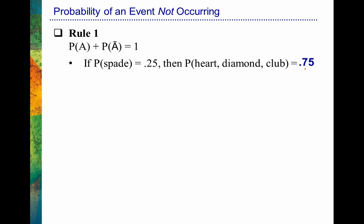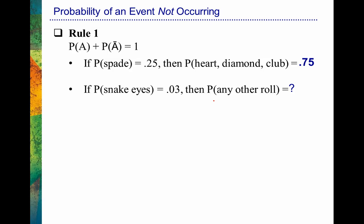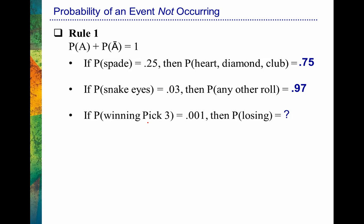Let's look at more complement examples. Probability of snake eyes: if the probability of snake eyes equals 0.03, then the probability of not getting snake eyes is 0.97, because they need to equal one — 100% of the time you need to roll either snake eyes or something else. Probability of winning the Pick 3: we know that equals 0.001, so the probability of losing is 0.999. The probability is almost certain on any given attempt that you're going to lose. The probability of some event plus its complement must add up to one, or 100%.